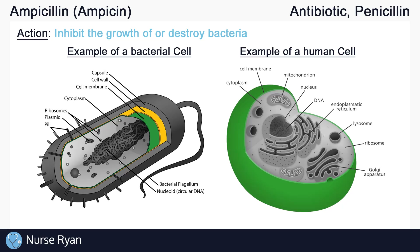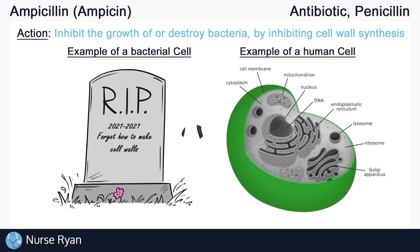The way that penicillins work is by inhibiting cell wall synthesis in susceptible bacteria — basically preventing the bacteria from growing their cell walls. And without a cell wall, bacterial cells become very vulnerable and quickly die off.